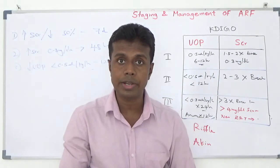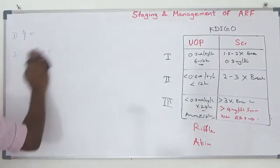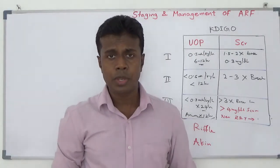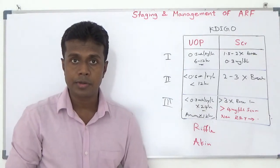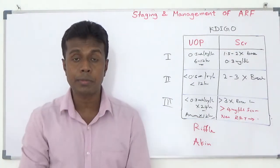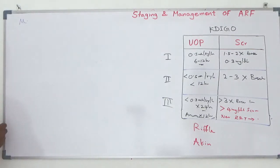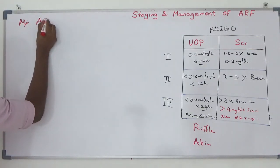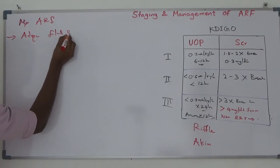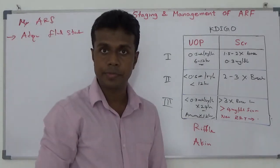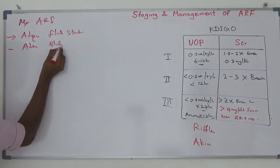Management of acute renal failure: Number 1 — check whether your patient has adequate fluid status. If not, resuscitate with fluid. Check whether your patient has adequate blood pressure. You need adequate volume status to perfuse your kidney — one liter of blood per minute should go through your kidney. Adequate blood pressure is needed for glomerular filtration. So you should have adequate fluid status and adequate blood pressure.